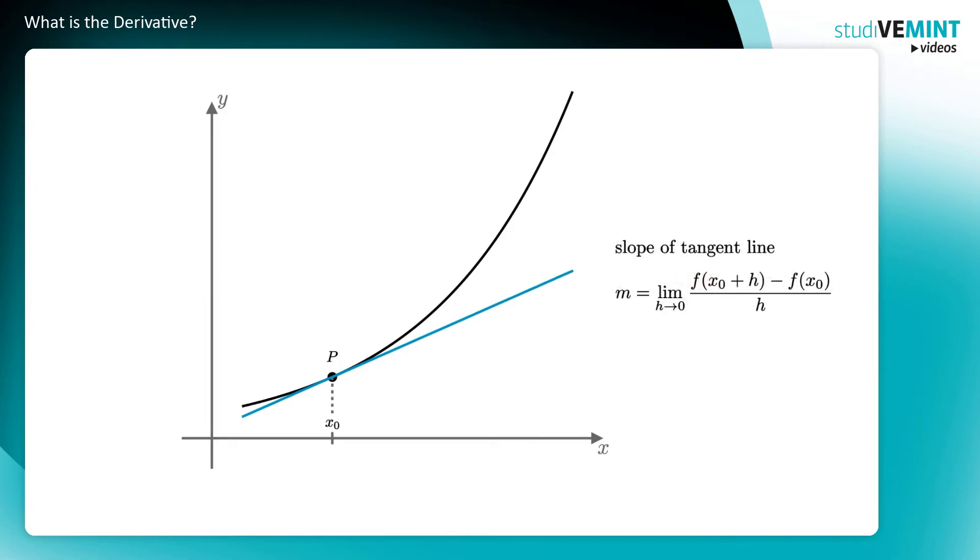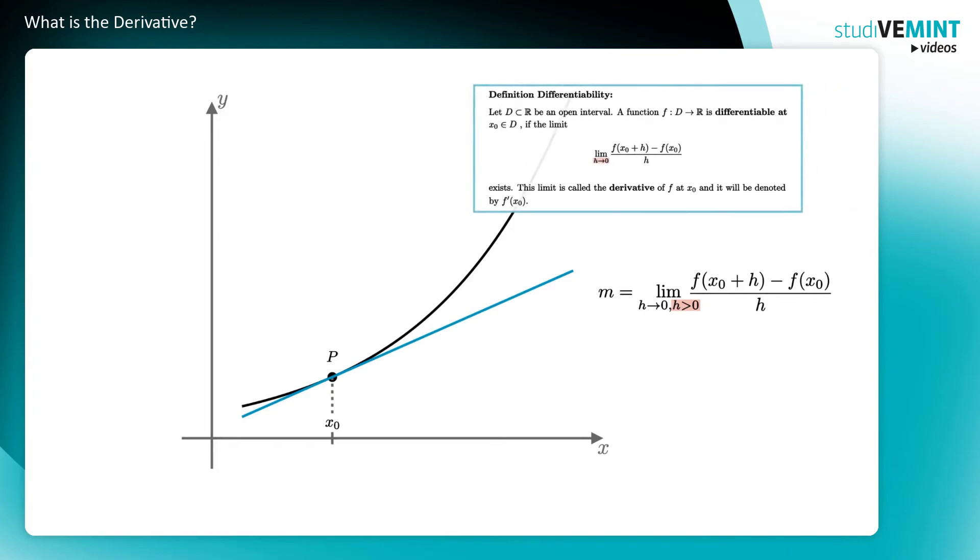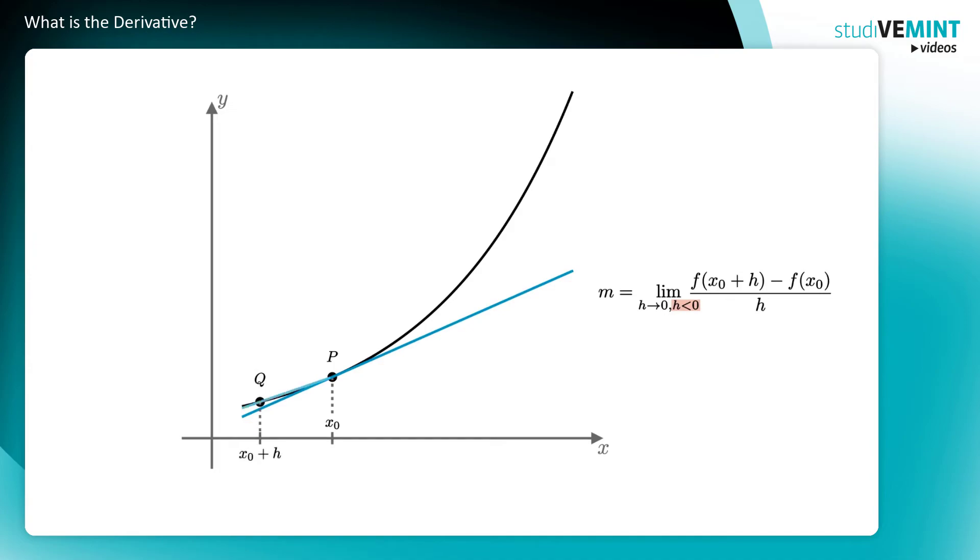You approached x₀ from the right-hand side, that is, with a positive h. But you don't find this restriction in the definition of the derivative. That is, because h tends to 0 means that you have to approach from the right-hand side and the left-hand side, and the results have to be the same. If you are approaching from the left-hand side, you have to take h smaller than 0, that is negative. Everything else remains the same. Again, you let h tend to 0 to approach the point p. You see that you end up with the same straight line.